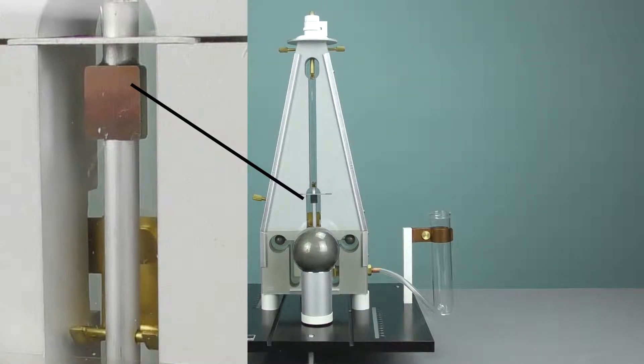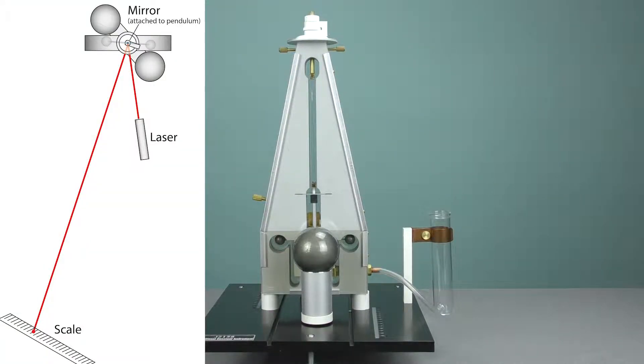The built-in mirror allows you to measure the angular position of the pendulum. Since these are very small changes, you will need an optical lever and you will have to provide a laser and a millimeter scale.